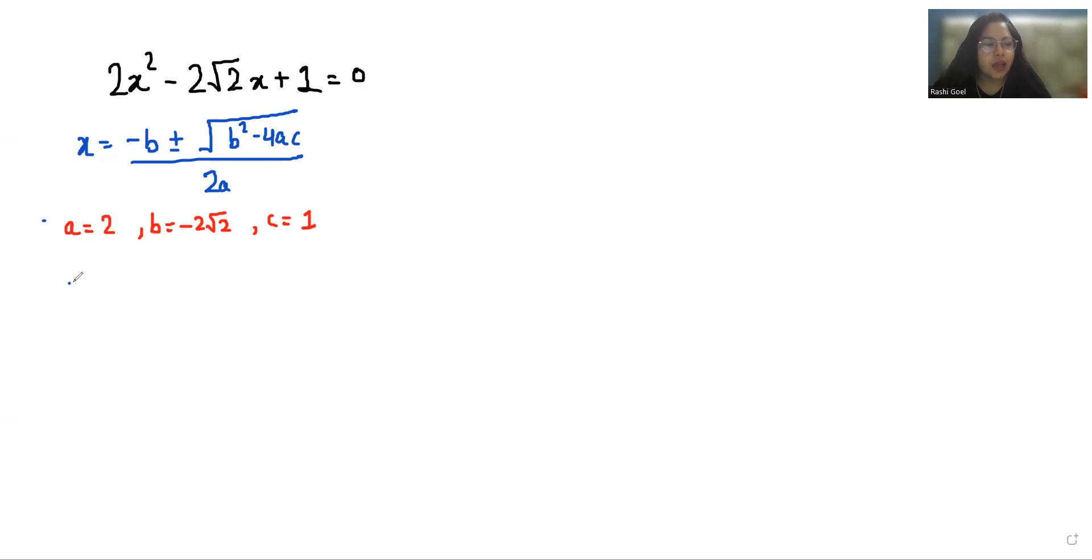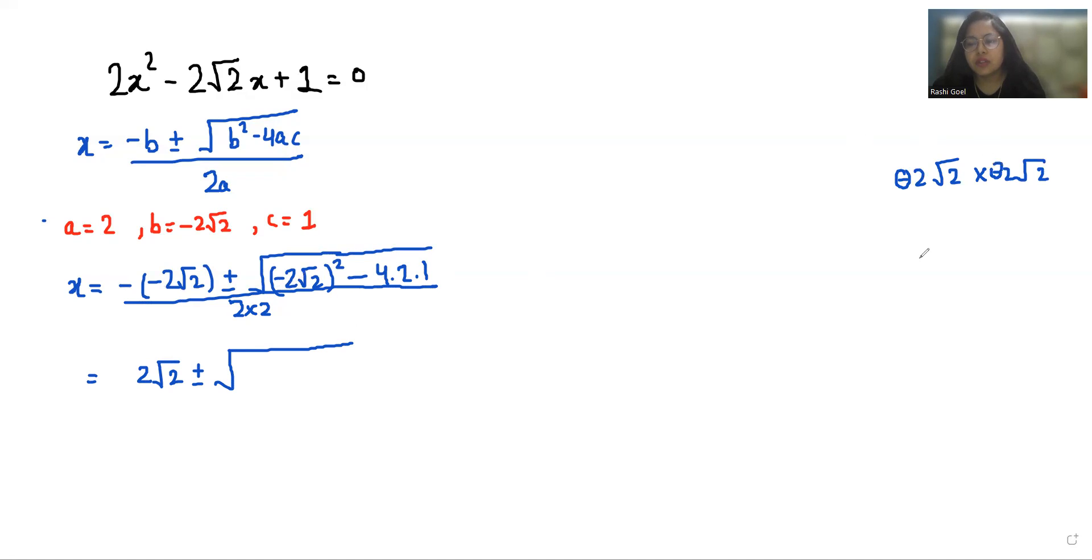Now x = (-(-2√2) ± √((-2√2)² - 4(2)(1))) / (2(2)). So negative negative is positive, 2√2 ± √((2√2)² - 4(2)(1)). Now (2√2)² is 8, and 4 times 2 times 1 is 8. So this gives us 2√2 ± √(8 - 8) / 4.